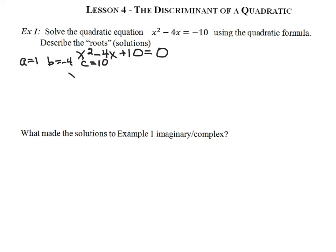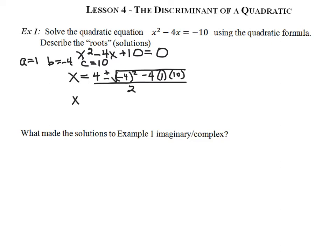Using the quadratic formula, x is equal to the negative of negative 4, which is positive 4, plus or minus the square root of b squared — so negative 4 squared — minus 4 times 1 times 10, all over 2 times 1. Underneath the radical, I end up with 4 plus or minus 16 minus 40, which is negative 24, all over 2.